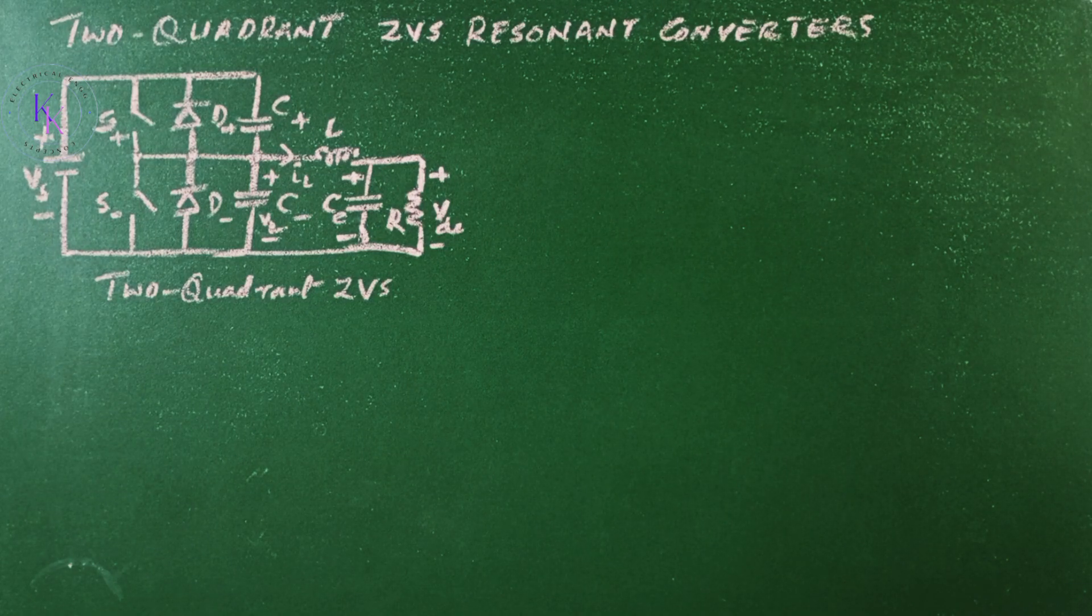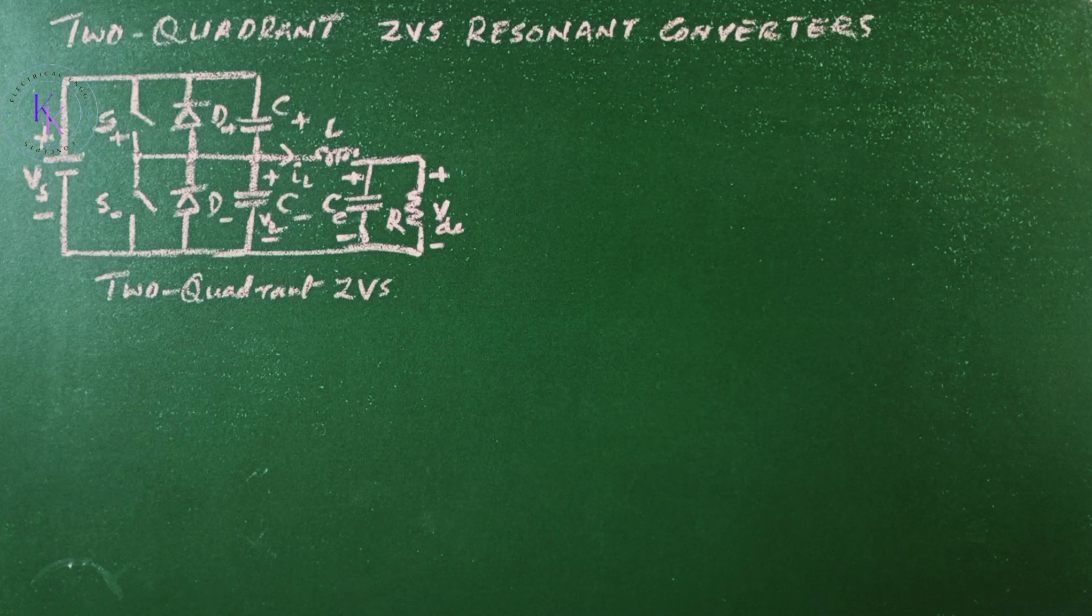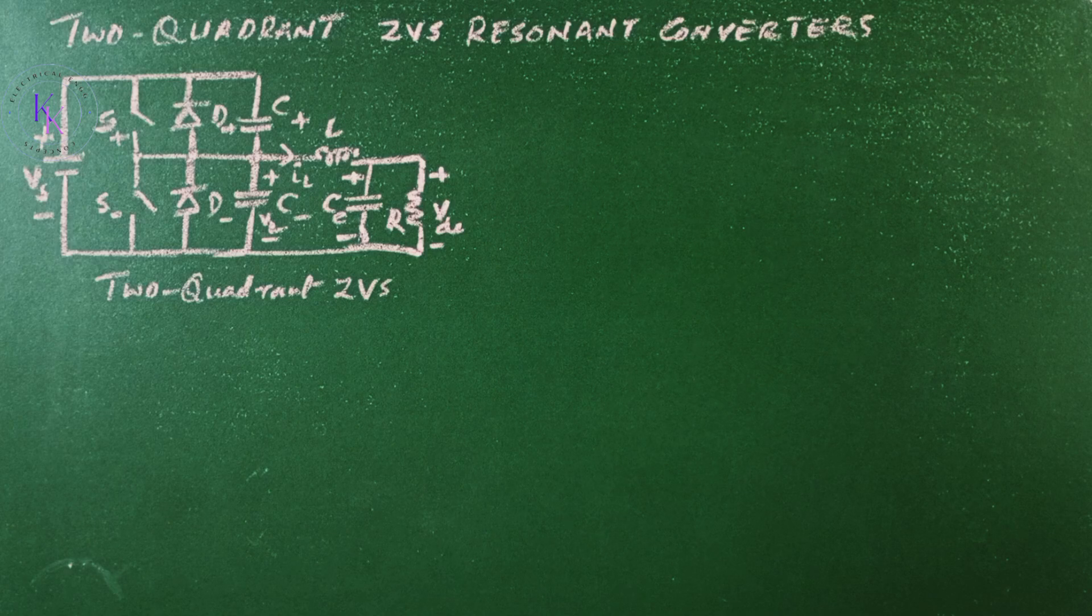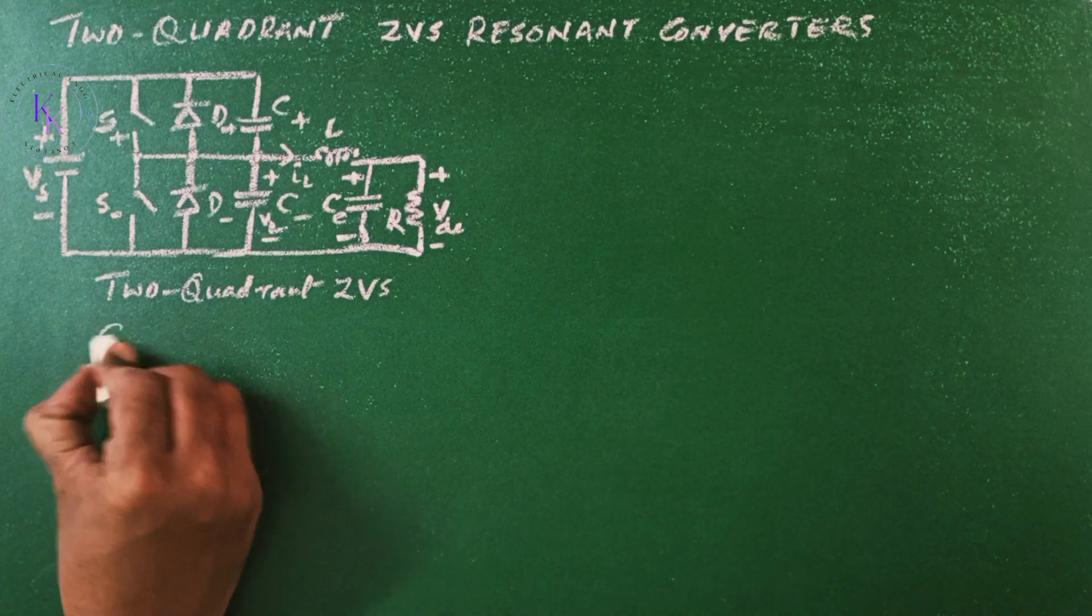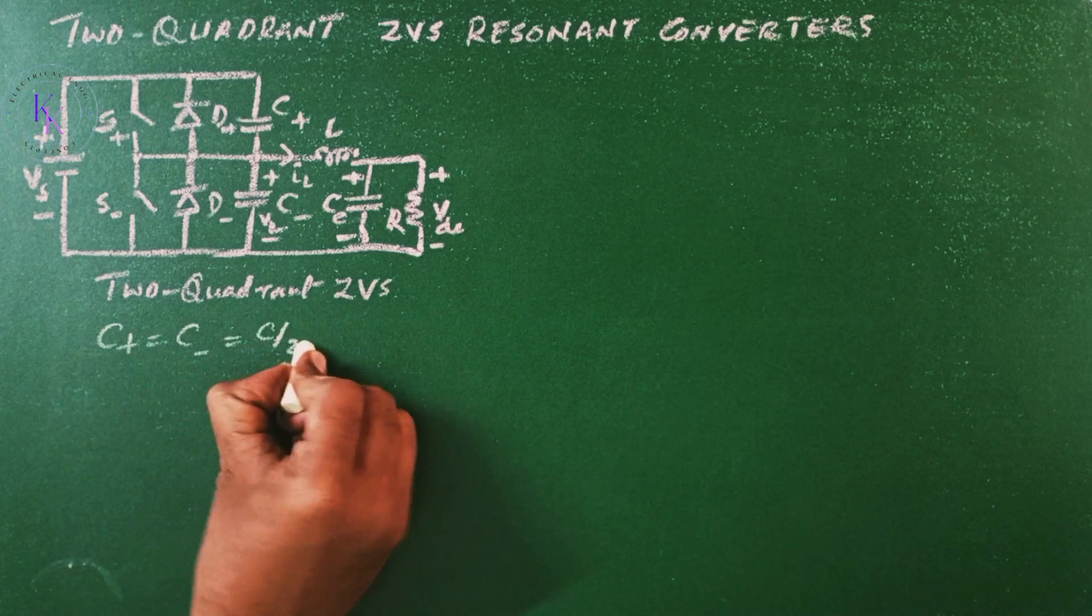Two-quadrant zero voltage switching resonant converter. The ZVS concept can be extended to two-quadrant class A chopper as shown in the figure. This is the figure of two-quadrant inverse inverter where the capacitor C plus equals C minus which equals C by two.